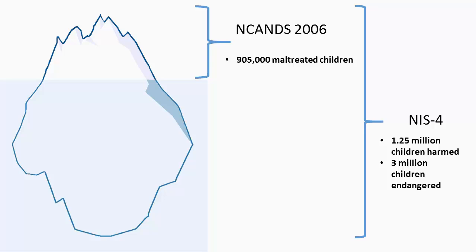NIS-4 data were collected in 2005 through 2006 by Andrea Sedlak, Westat, the Children's Bureau, and the Office of Planning, Research, and Evaluation in the Administration for Children and Families, U.S. Department of Health and Human Services. Previous NIS cycles were conducted in 1981, 1988, and 1996.